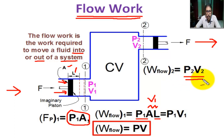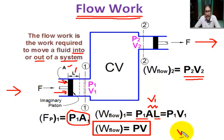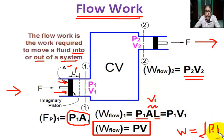So the general form of flow work is: W_flow = P × V (pressure times volume). For comparison, in a non-flow process, the displacement work done equals the integration of P dV.